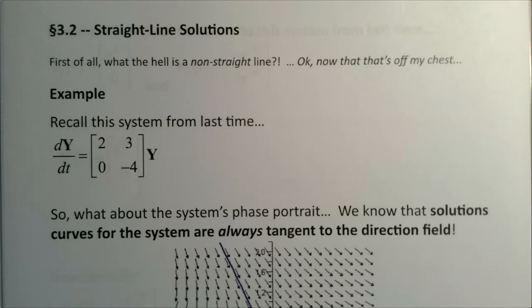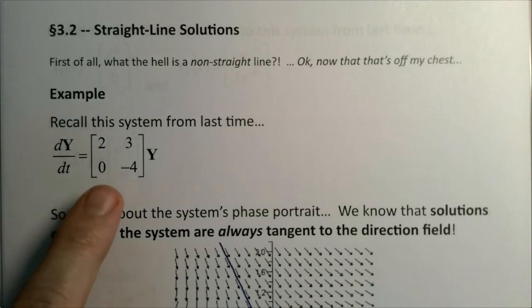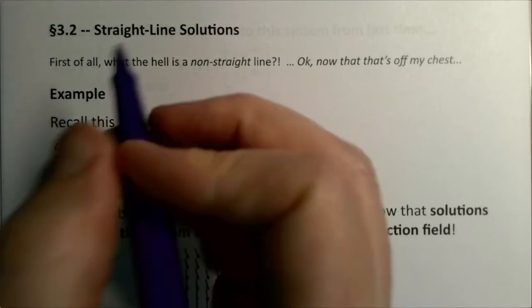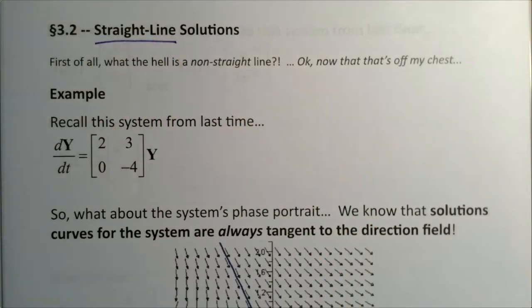Section 3.2 begins with us taking a look at an old example from section 3.1. But before we do that, notice the name of this section: Straight-Line Solutions. We've already kind of tipped our hat towards what a straight-line solution is, but what does it really mean?